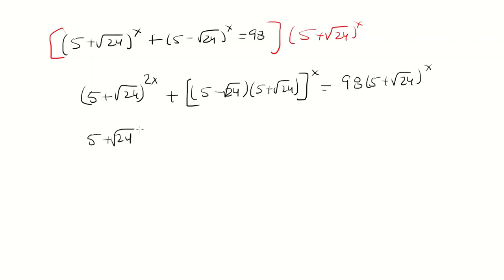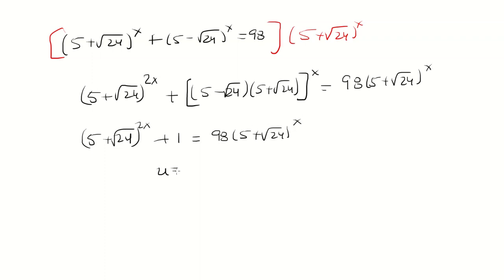The nice thing is that when you multiply 5 minus the square root of 24 with 5 plus the square root of 24, that turns into 1. And 1 to the x is just 1. So now I can treat this as a quadratic by making a u-substitution where u equals 5 plus the square root of 24 raised to the x power.